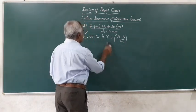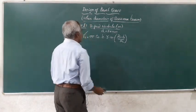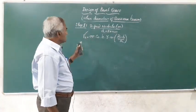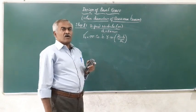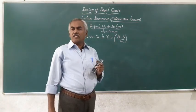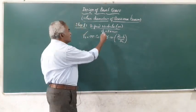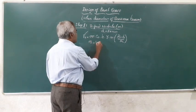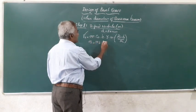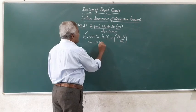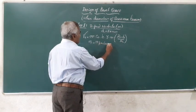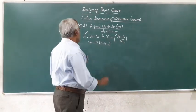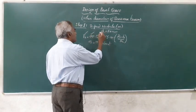Next is sigma naught, the allowable static stress for the weaker member. For 0.2% carbon steel heat treated, this value is 193 Newton per mm². Then comes Cv, which is also represented as Kv in some data handbooks — they mean the same. Cv stands for the velocity factor.